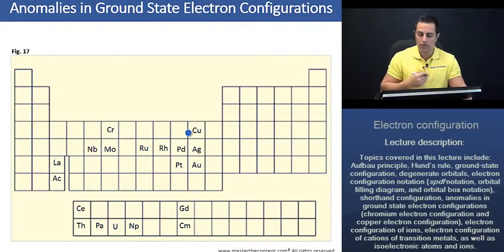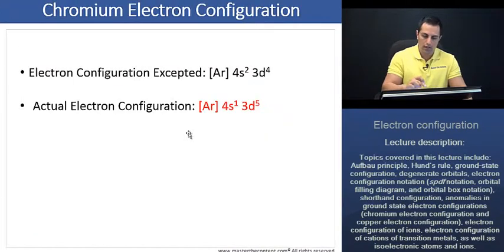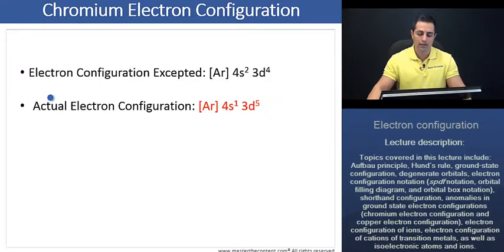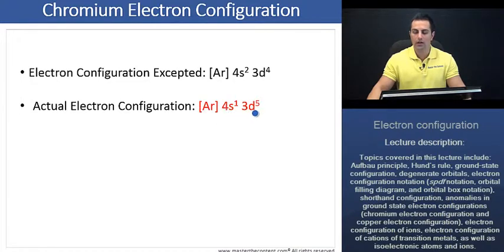These are the two elements you're most likely going to come across on test day. Beginning with chromium: using the Aufbau principle guidelines, we would anticipate that the electron configuration would be the noble gas configuration of argon, 4S2-3D4. Yet the actual electron configuration for chromium is the noble gas configuration of argon, 4S1-3D5.